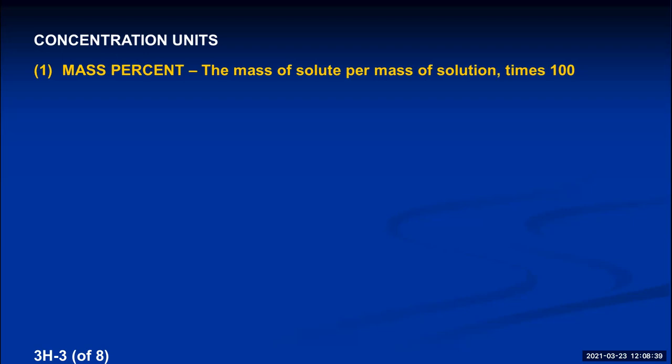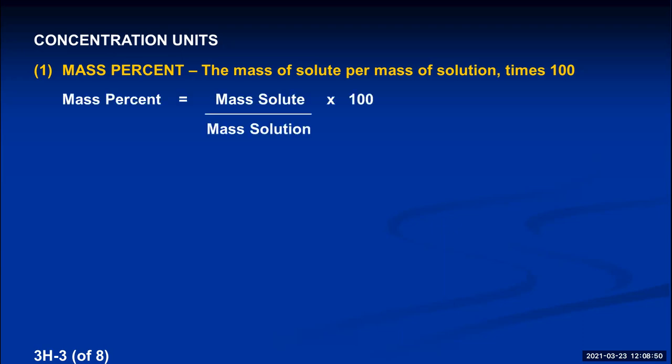Mass percent is simply a fraction — the mass of the solute divided by the mass of the solution, multiplied by 100 to make it a percent. Anytime you have a fraction, multiplying by 100 gives a percent, multiplying by 1,000 gives parts per thousand, and multiplying by a million gives parts per million. So a percent is really parts per hundred.